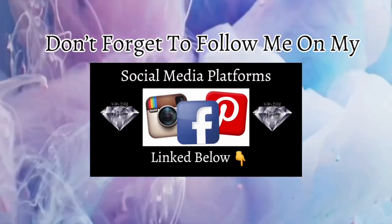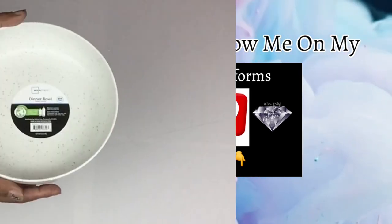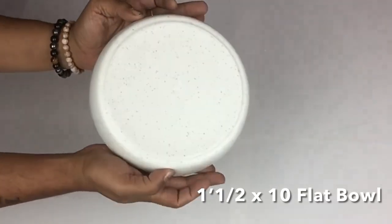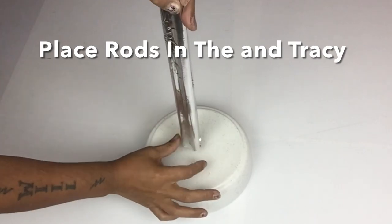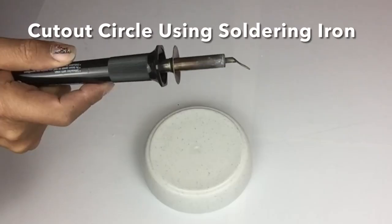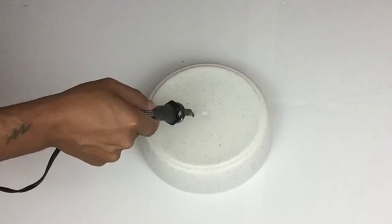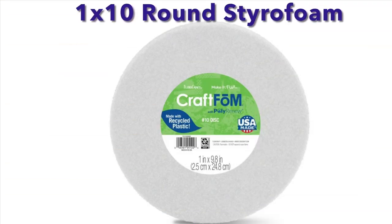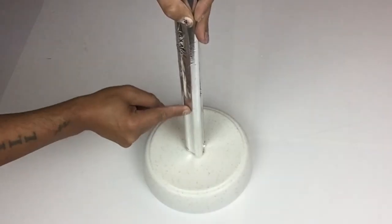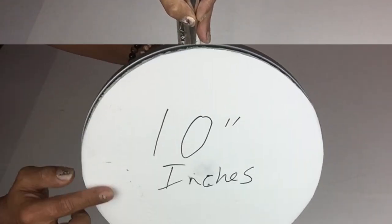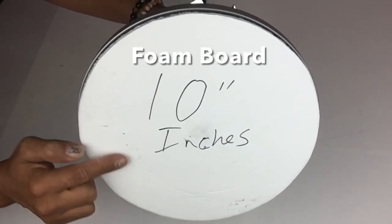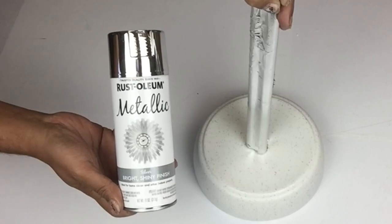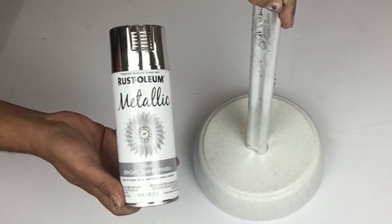Don't forget to follow me on my social media platforms linked below. I also used a one and a half by ten inch bowl, placed my rods in the center, then I traced it and cut it out with my soldering iron. I also took a one by ten round styrofoam and glued it inside the bowl, then I inserted my rods. I also took a foam board, cut it to size, and glued it in the bottom. Then I took it to a well-ventilated area and spray painted two coats of metallic silver on the base.